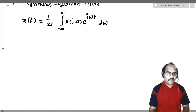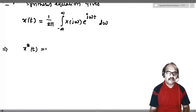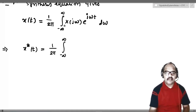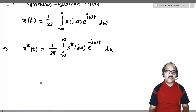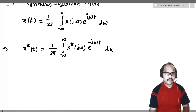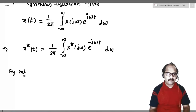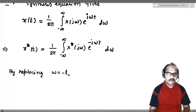We want the Fourier transform of x*(t), so we take the conjugation of the synthesis equation. We get: x*(t) = (1/2π) ∫₋∞^∞ X*(jω) e^(-jωt) dω. Now we don't want the negative sign in the exponent, so we apply a change of variables, replacing ω with -l.